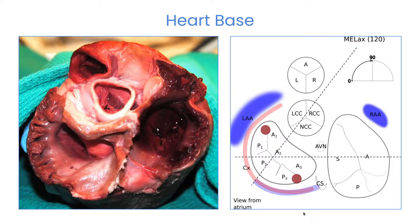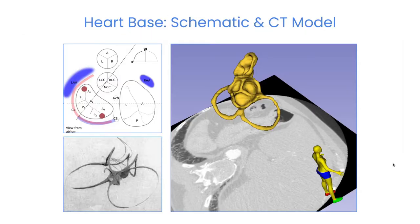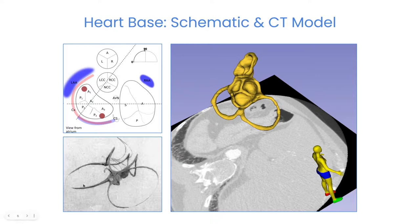On the right here we have the schematic diagram that by the end of this talk hopefully you'll be able to draw from memory. The heart base corresponds roughly to the fibrous skeleton of the heart. This structure is clinically important because it forms strong anchor points for sutures. It includes the crown-shaped support structures of the aortic and the pulmonic valves, and these two denser areas of fibrous tissue called the trigones — the lateral trigone and the medial trigone. The medial trigone also includes the AV node, so it's a very sensitive structure. In addition you have these fibrous partial rings that extend around the tricuspid and mitral valve annuli, but they're often incomplete.